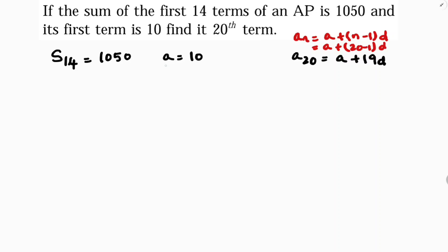I have the value of A, I need the value of D. So I will use SN formula. SN formula is N by 2 into 2A plus N minus 1 times D.